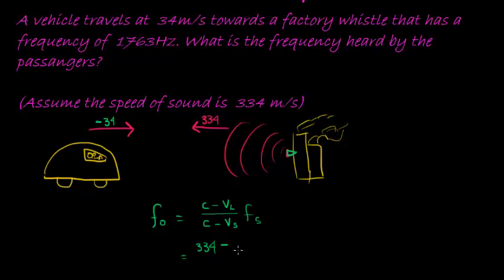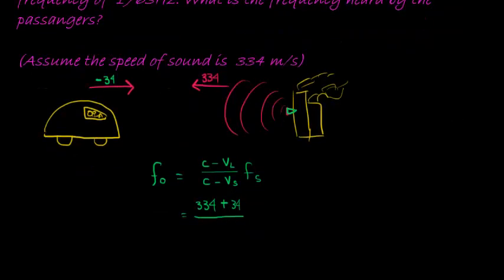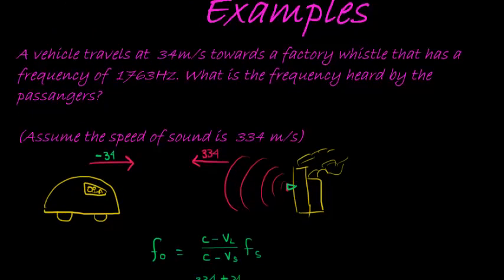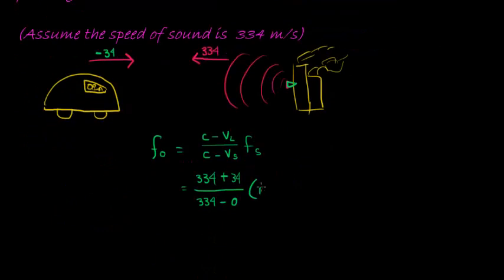So that would be negative and therefore it makes this positive 34 divided by, and then the velocity of the source is 0 but the velocity of sound is still 334 minus the velocity of the source which is 0, times the frequency which is 1763 hertz.